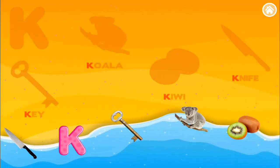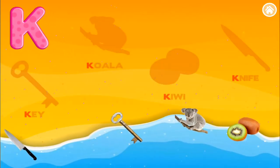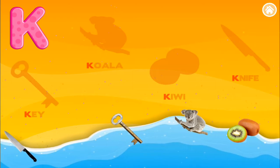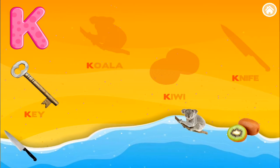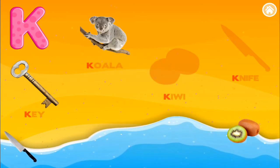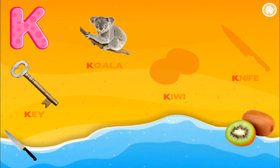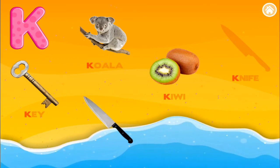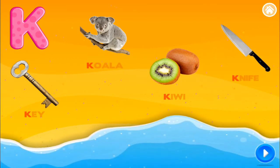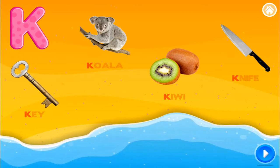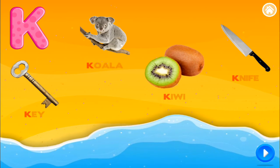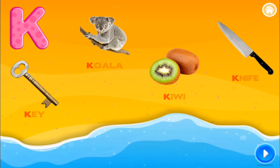Drag the pictures back to their place. K is for koala. K is for kiwi. K is for knife. Wonderful. K is for koala. K is for kiwi. K is for knife.